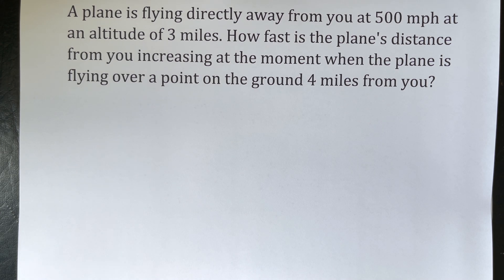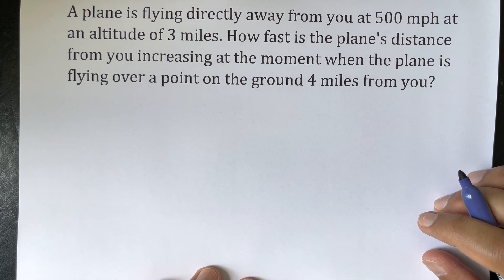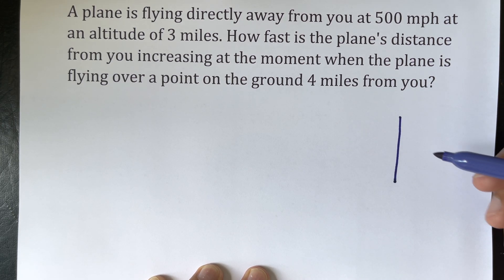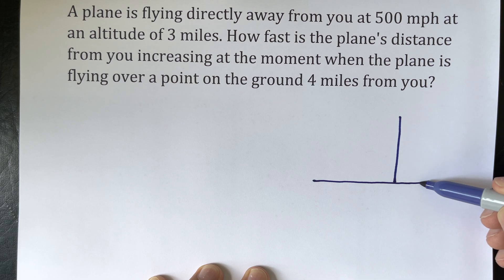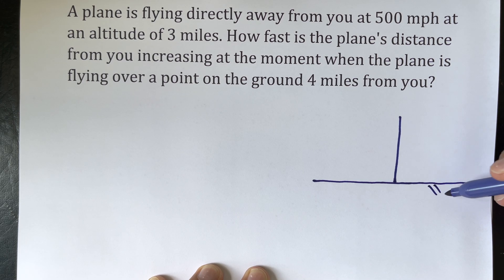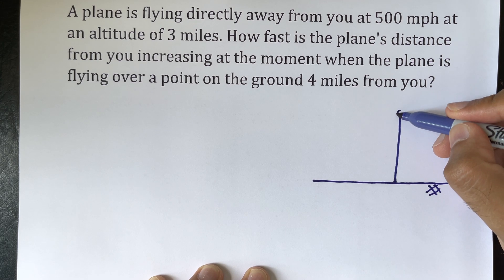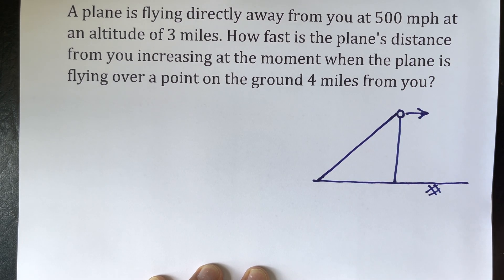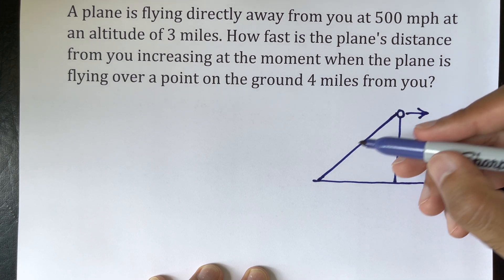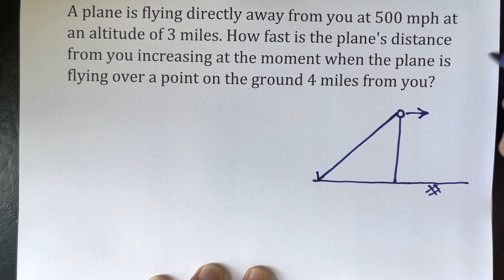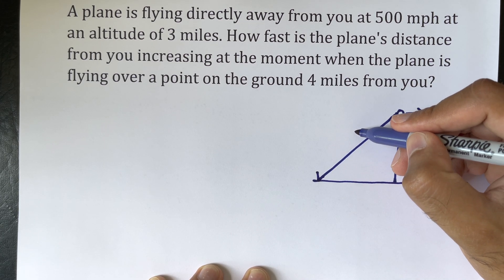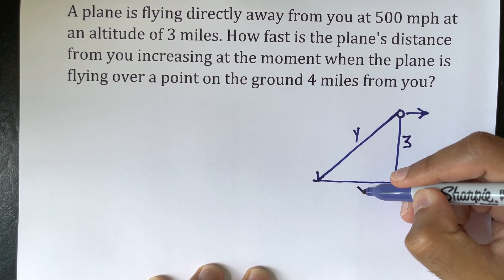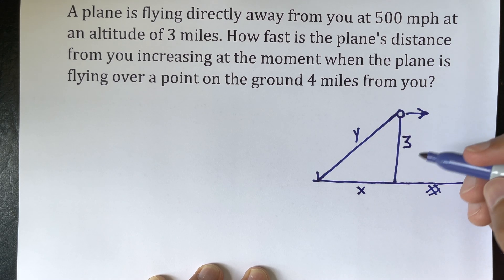Now to illustrate what's going on I'm just going to quickly draw a diagram. We have some form of triangle happening, so that's the ground, the plane's here flying in that direction, and we have the distance between you, which is here, is y, that's some distance, and altitude of three and there's a distance of x.